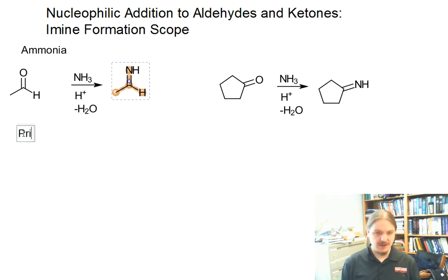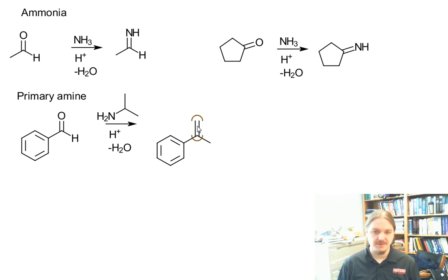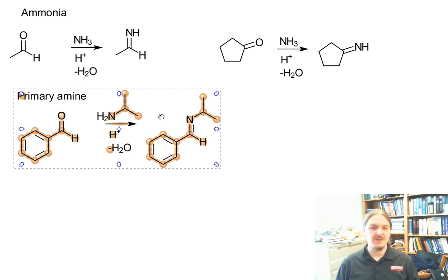Now, if we're using a primary amine, then we get an imine that has a carbon-nitrogen double bond. Let's use benzaldehyde as the aldehyde and isopropylamine as the primary amine. In this case, we get benzaldehyde isopropyl imine. As I mentioned in the previous video, imines have stereochemistry. In this case, you might not be surprised that this stereoisomer predominates because of steric effects.